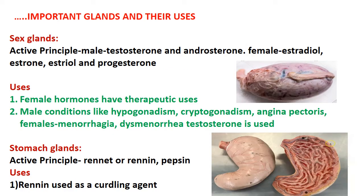For gonads or sex glands: in males the active principles are testosterone and androsterone; in females estradiol, estrone, estriol, and progesterone. Female hormones have therapeutic uses, and testosterone is used in conditions like hypogonadism, cryptorchidism, angina pectoris, menorrhagia, and dysmenorrhea. For stomach glands — in animals, the abomasum or true stomach has large numbers of glands producing enzymes and acids, most commonly renin and pepsin. Renin is used for curdling of milk in the preparation of cheese.